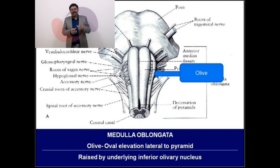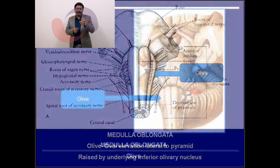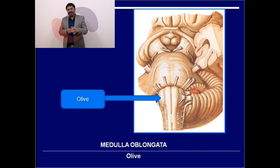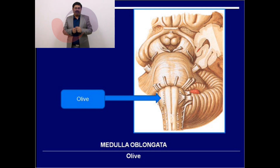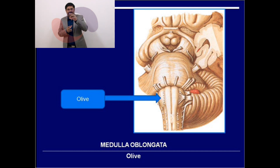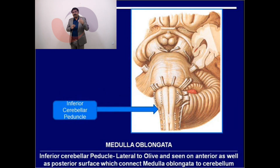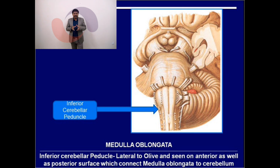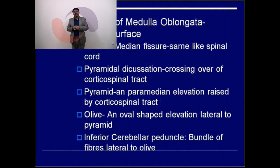Lateral to the pyramid is an oval-shaped elevation known as the olive. This elevation is raised by the inferior olivary nucleus, which is an accessory motor nucleus. Still lateral to the olive is another bundle of fibers known as the inferior cerebellar peduncle — a bundle connecting the medulla oblongata to the cerebellum, containing fibers coming from the spinal cord.